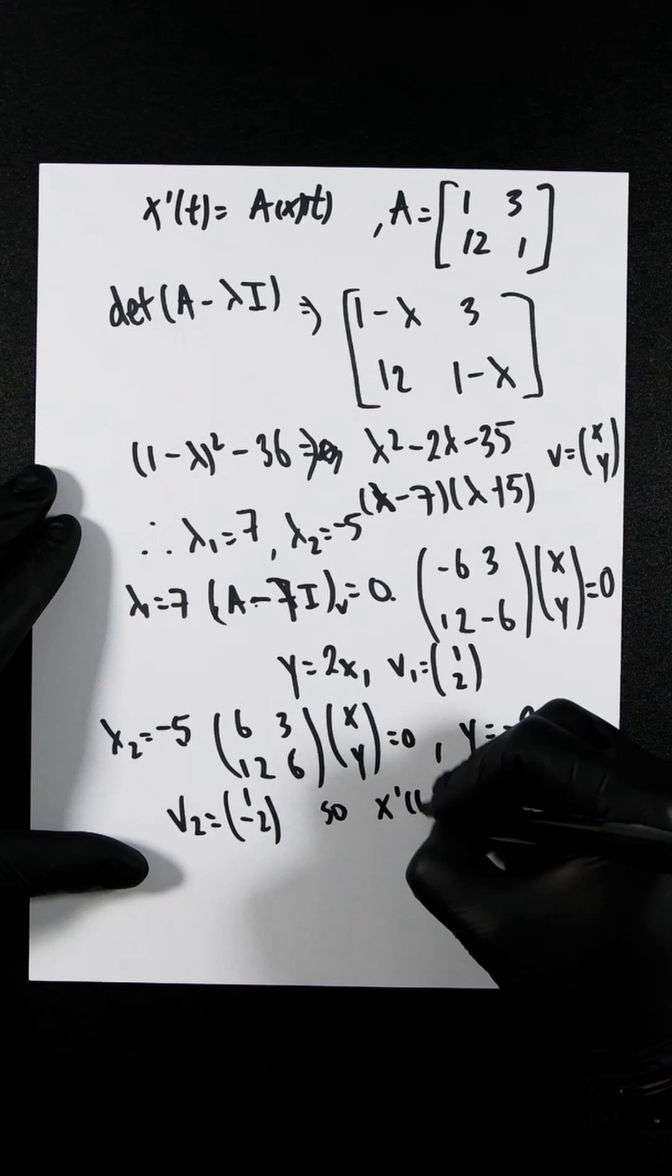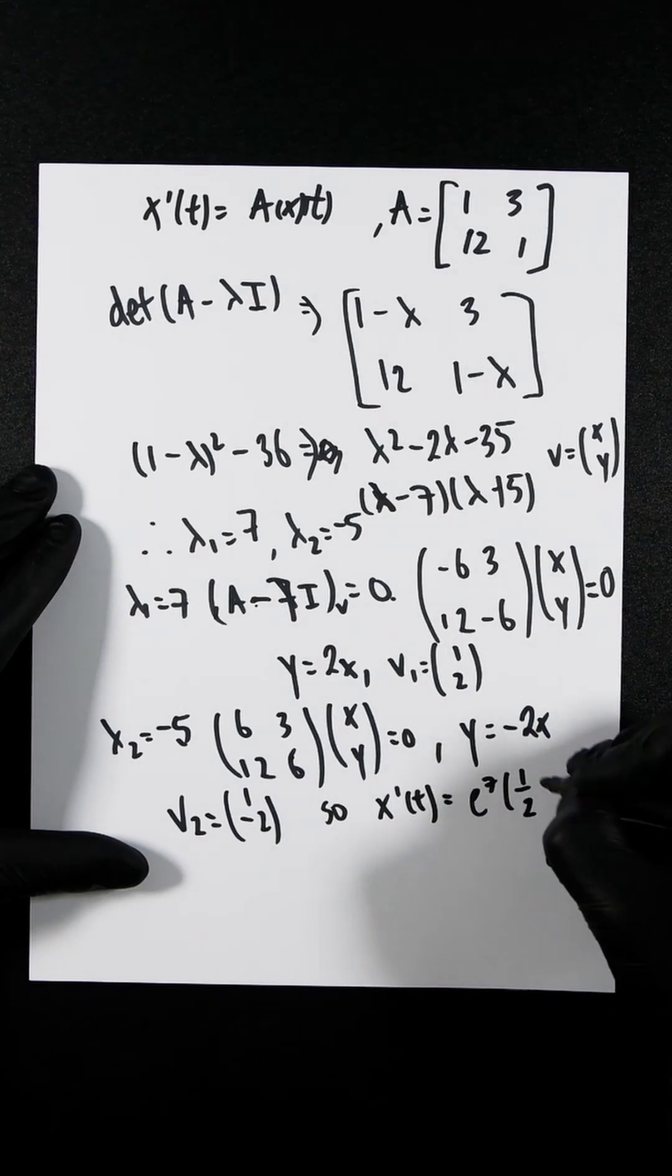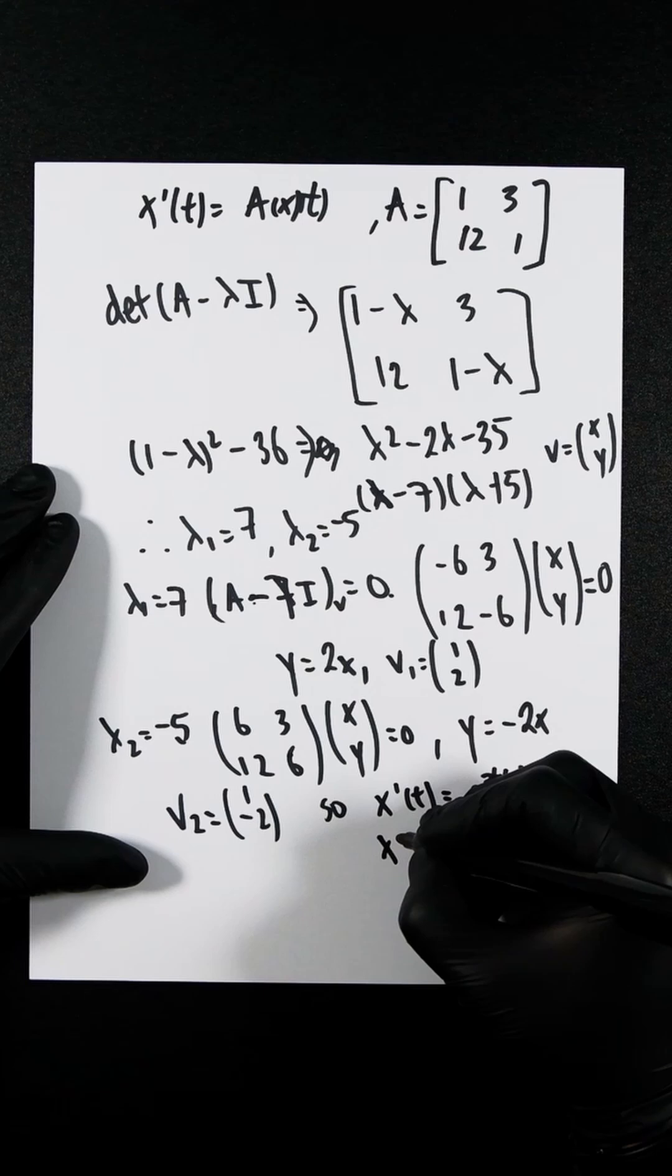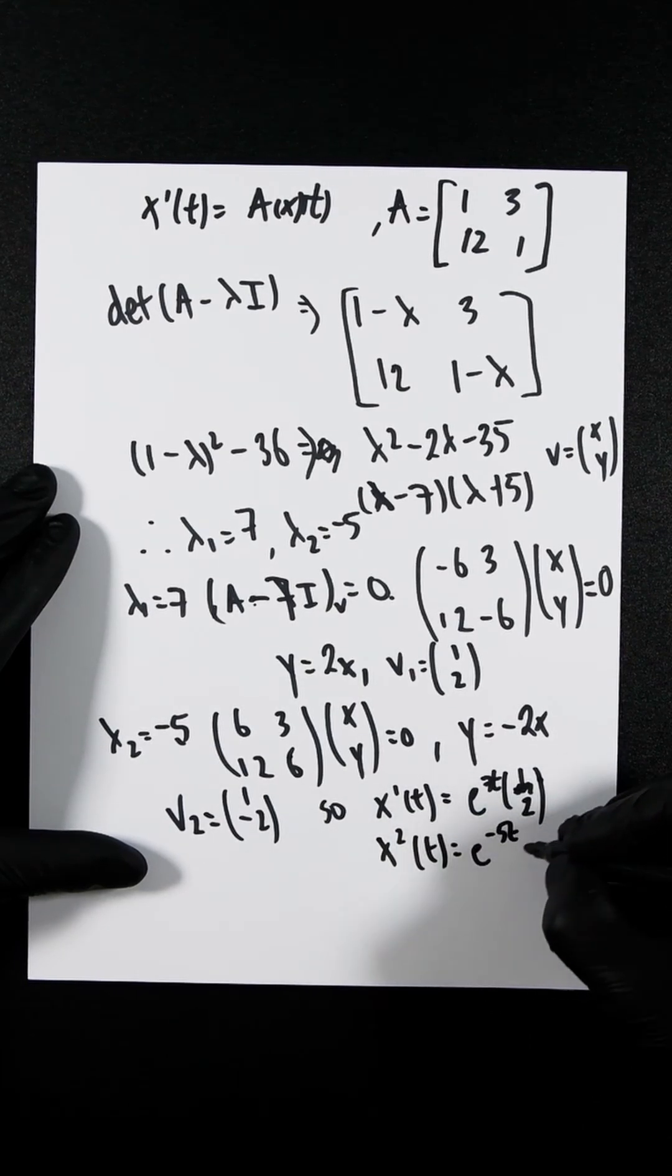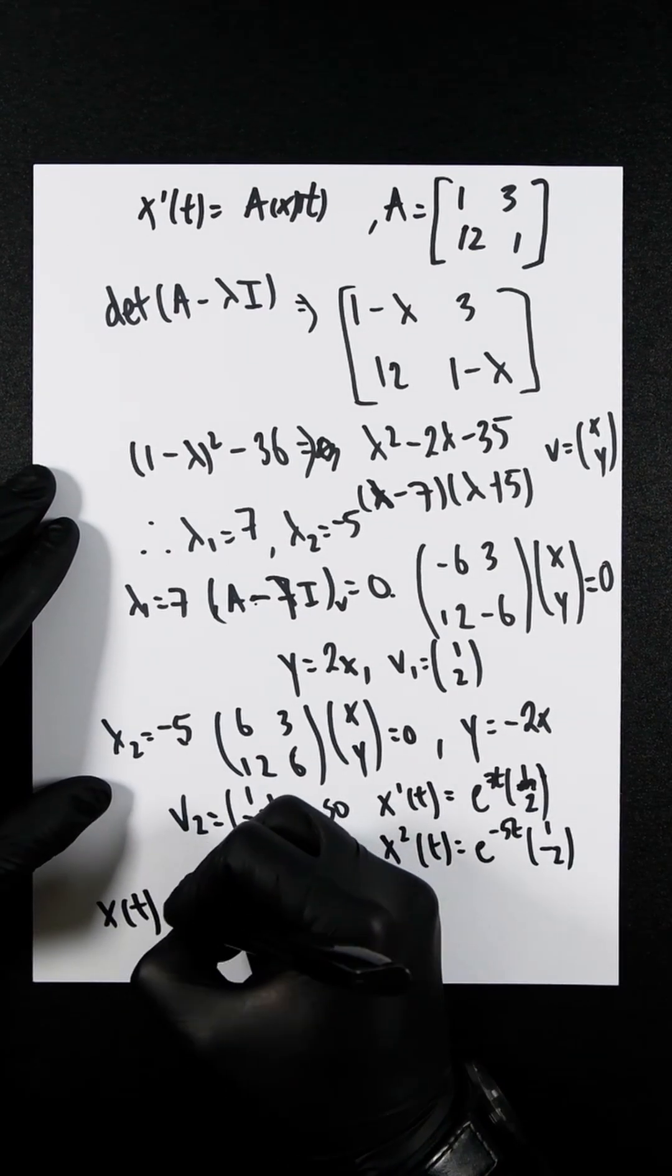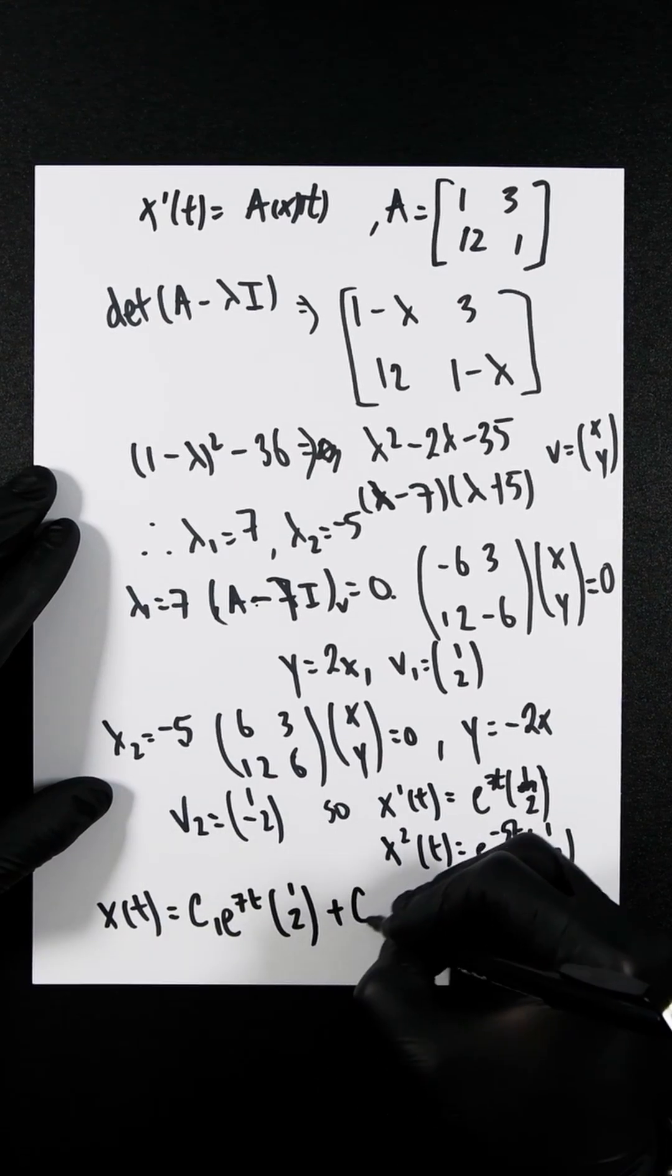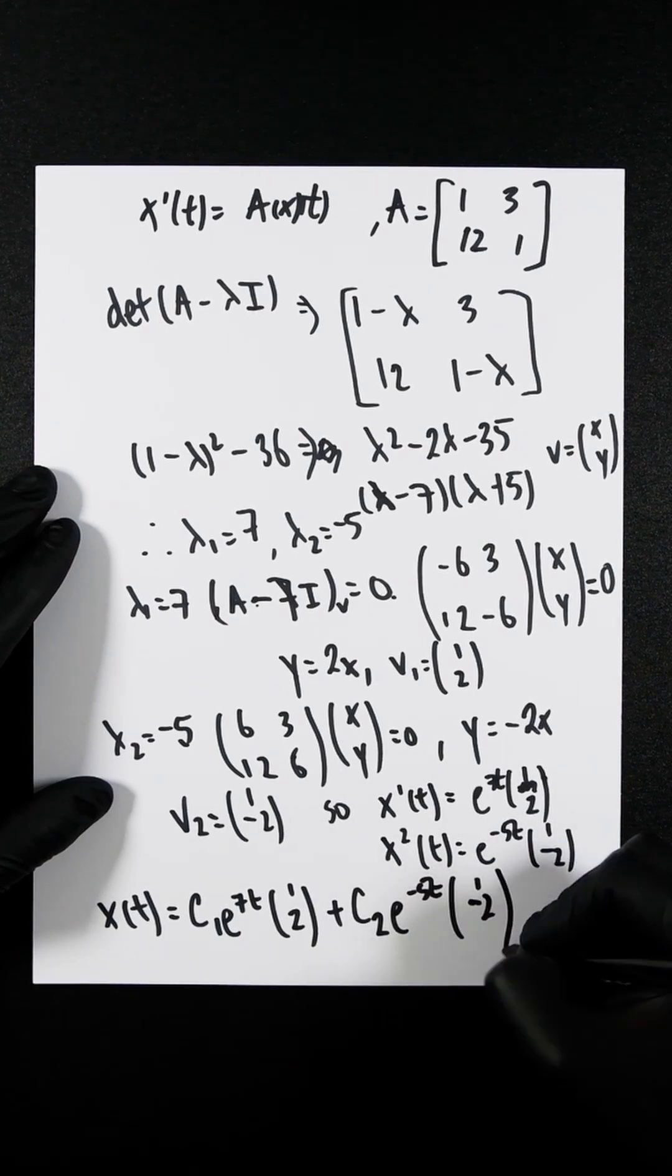Therefore, x1(t) equals e to the 7t times the vector [1, 2]. And x2(t) equals e to the minus 5t times [1, -2]. So the general solution x(t) is c1 times e to the 7t times [1, 2] plus c2 times e to the minus 5t times [1, -2].